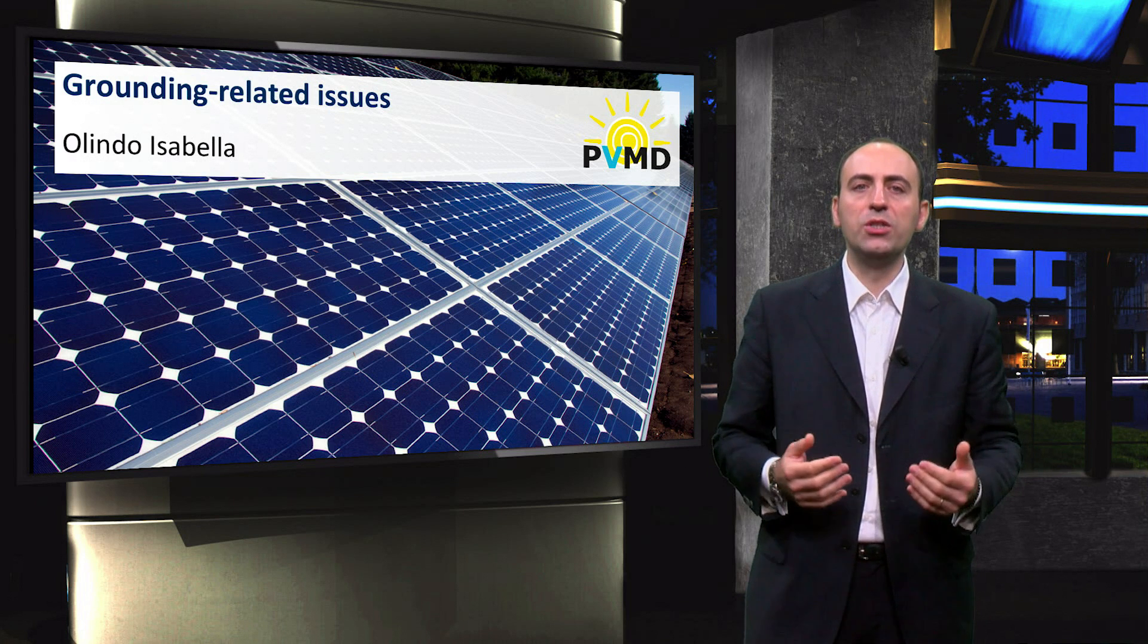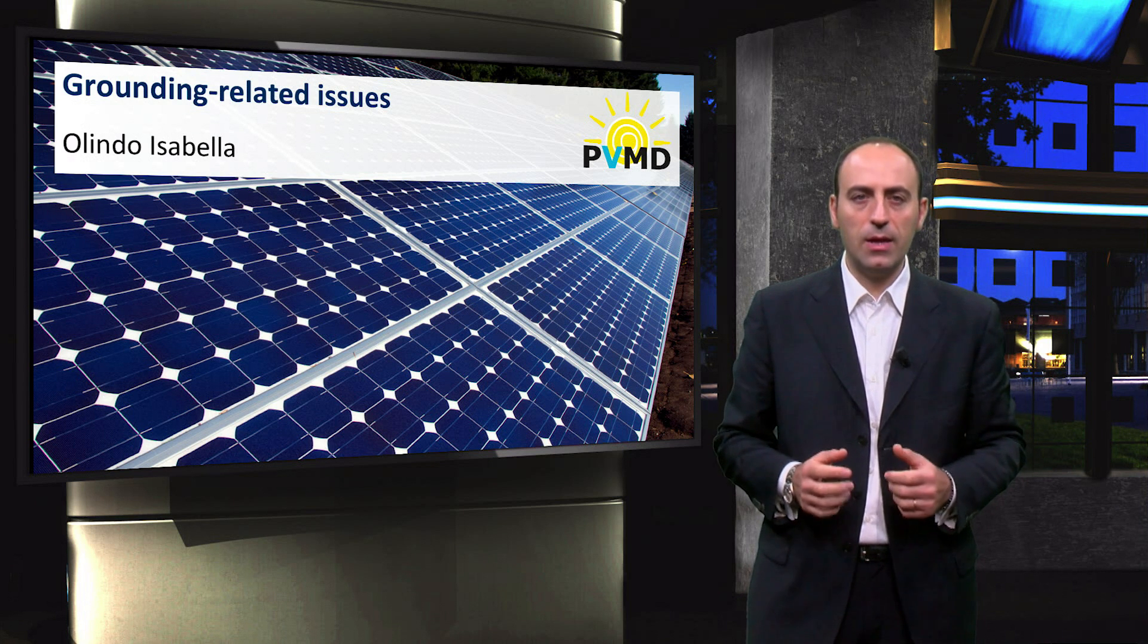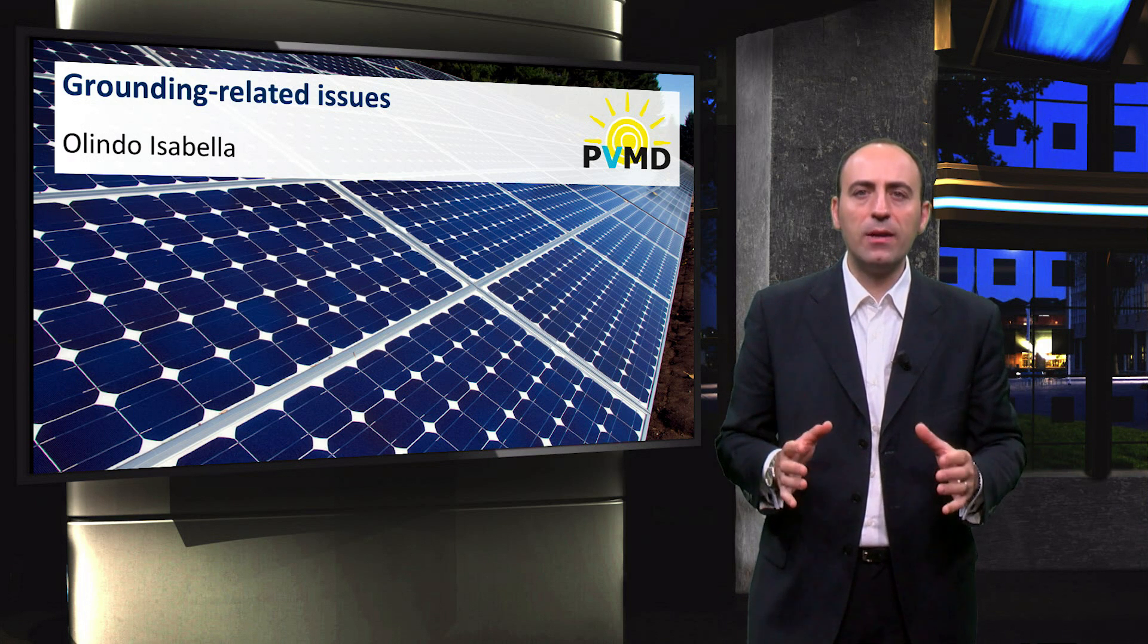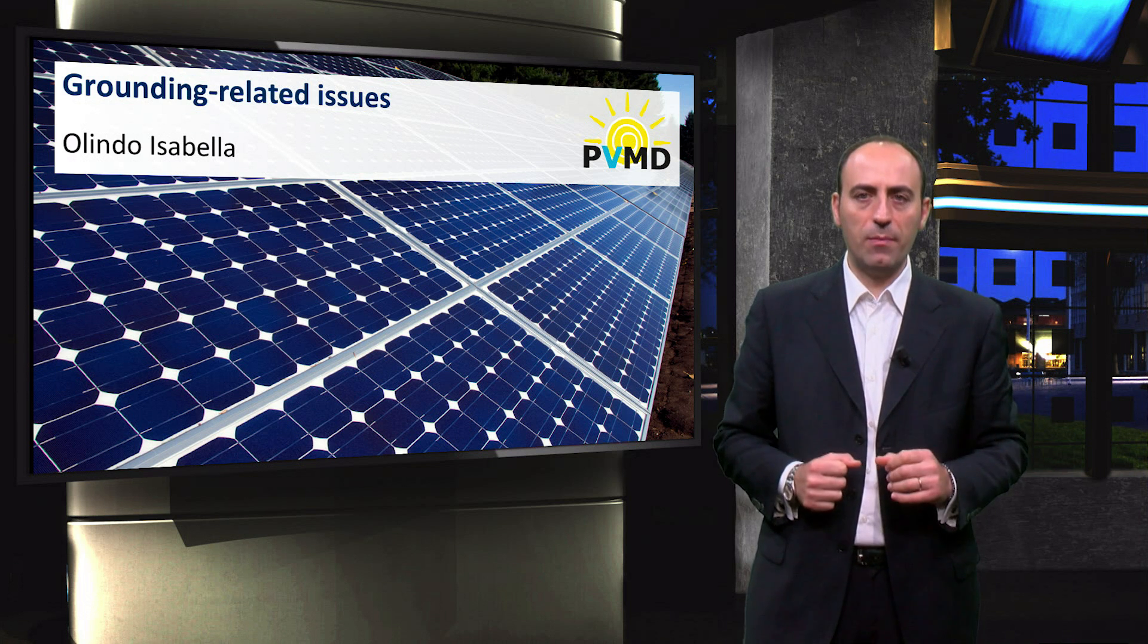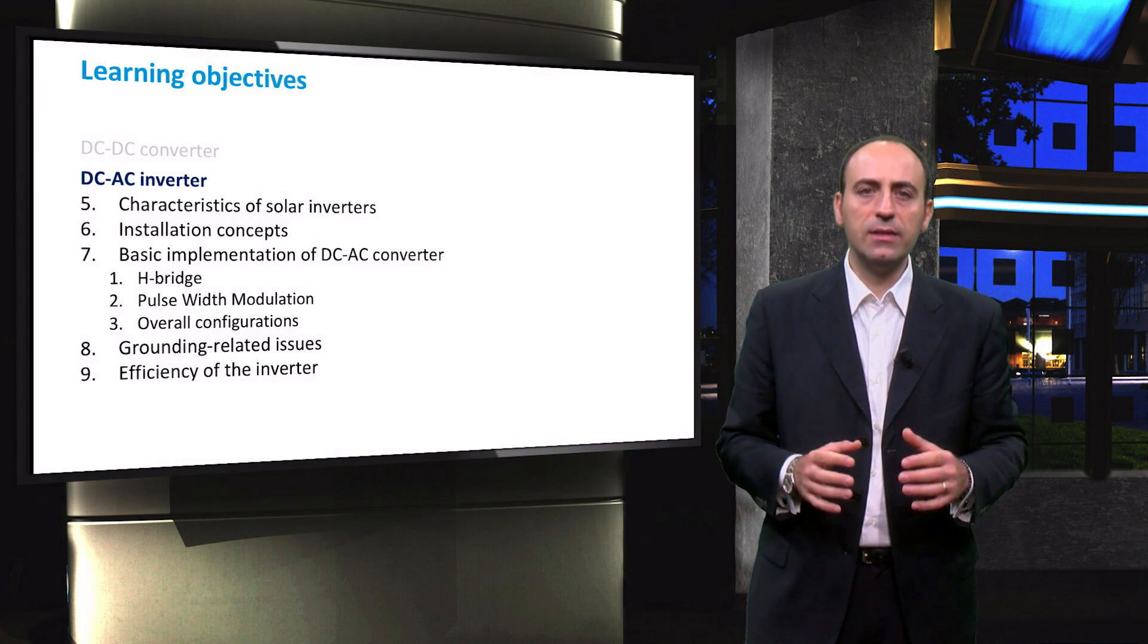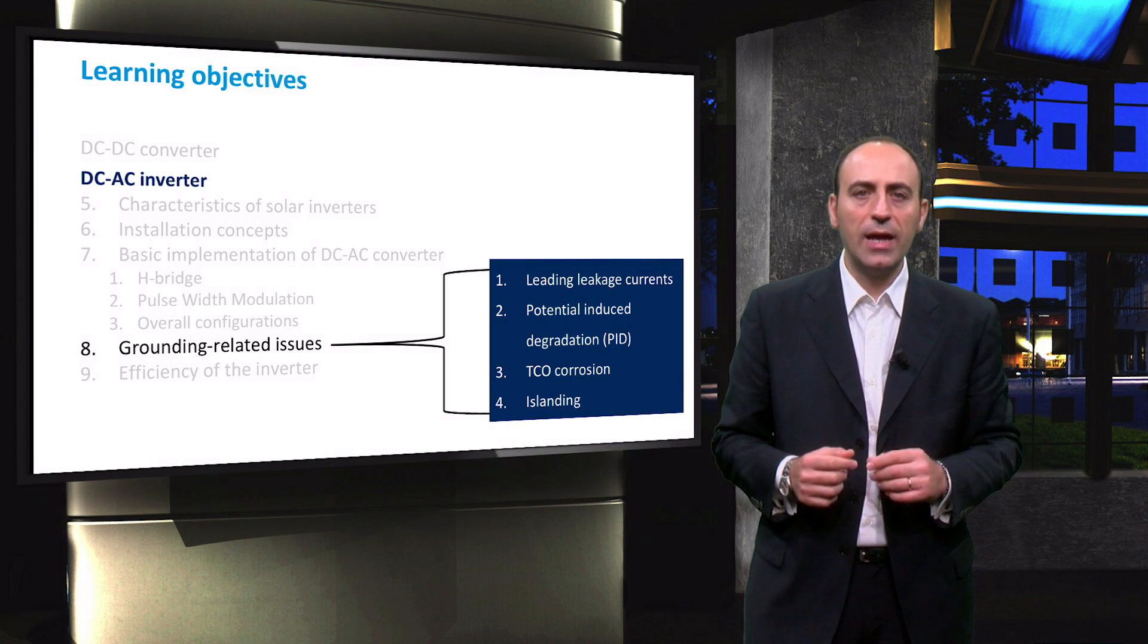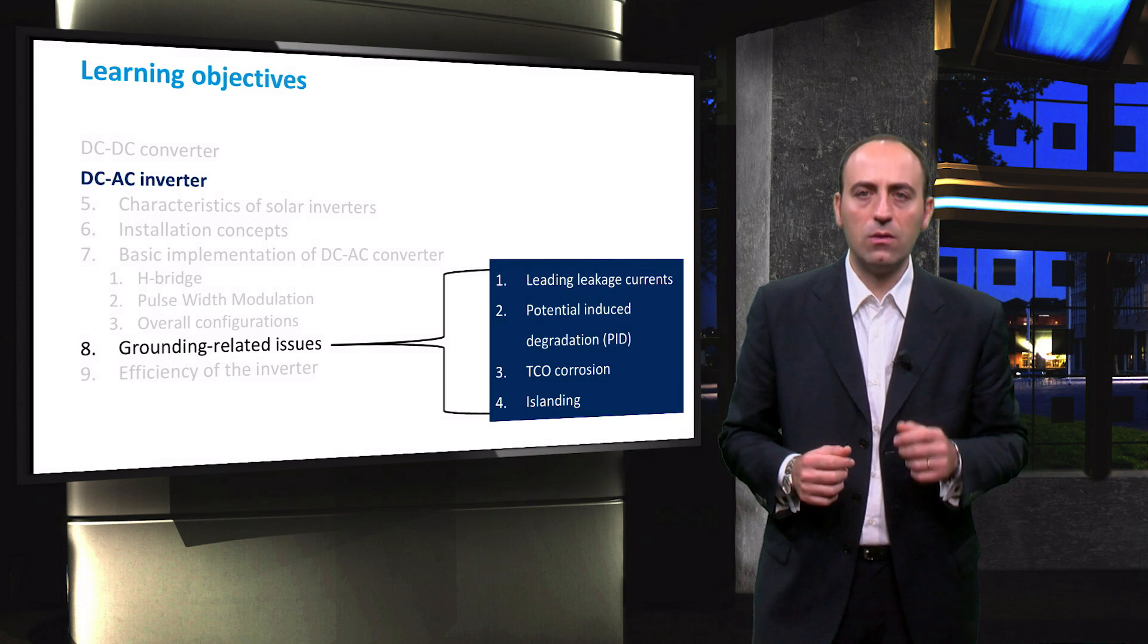In this video we are going to learn which issues can arise related to grounding of a PV system. As we will see, these phenomena decrease the performance of the PV panels. In particular, we shall look at leakage currents, potential induced degradation, TCO corrosion, and the effects of islanding on safety.